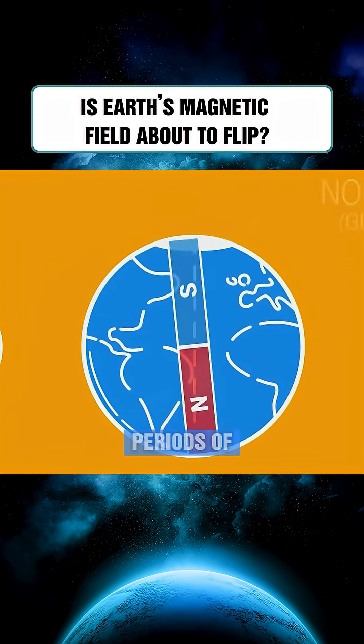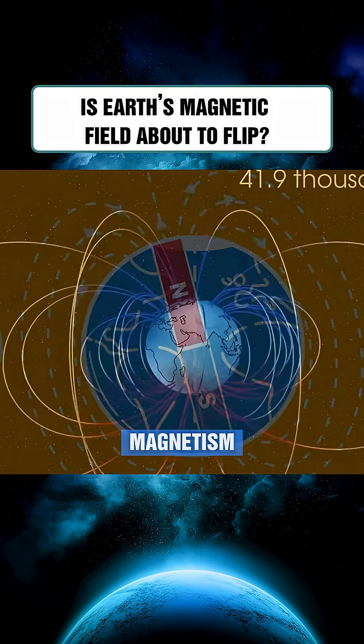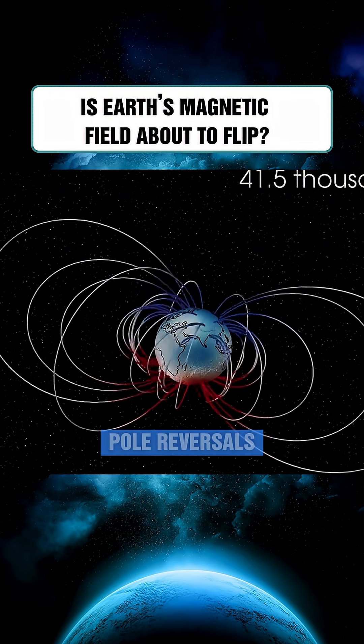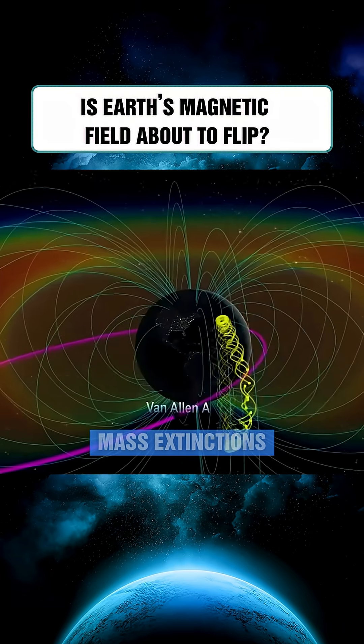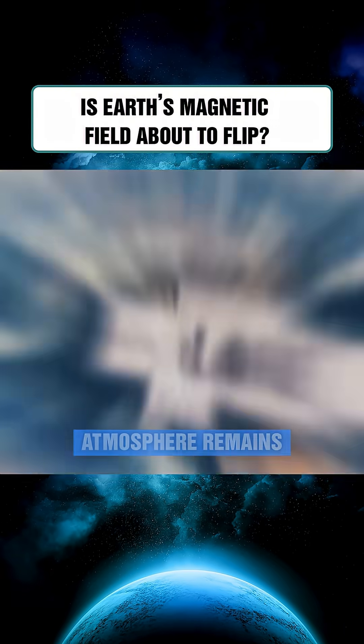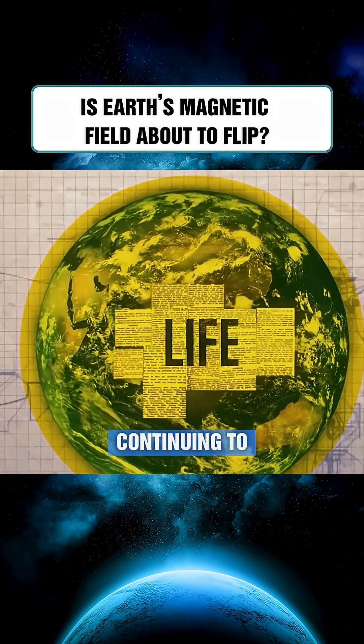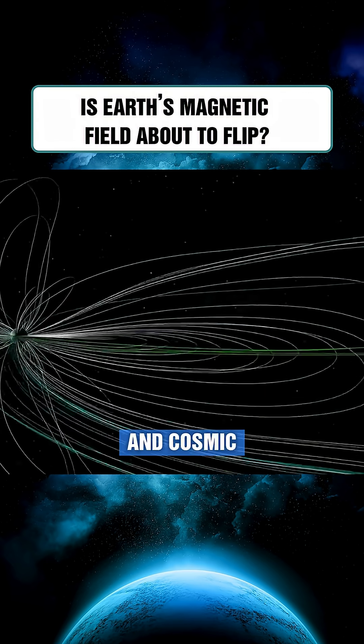The good news? Even during periods of severely weakened magnetism, Earth has survived multiple pole reversals without triggering mass extinctions. Our thick atmosphere remains a vital secondary shield, continuing to protect life from solar and cosmic radiation.